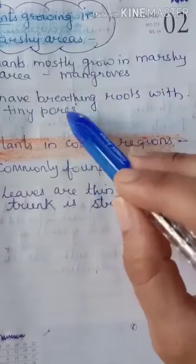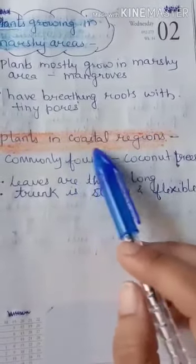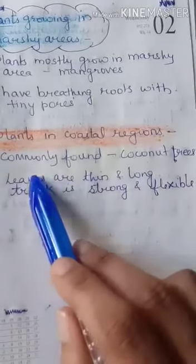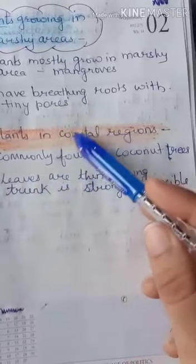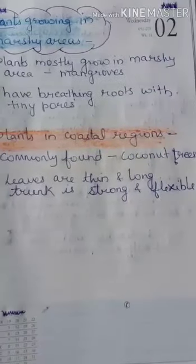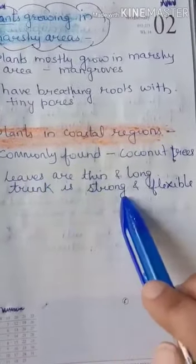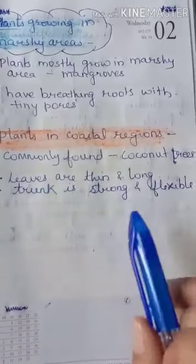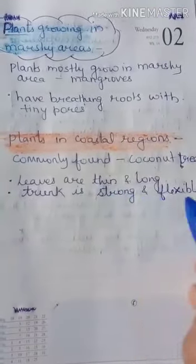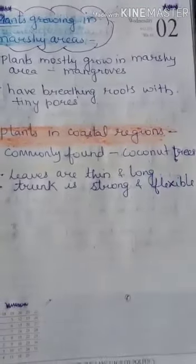Plants in coastal regions — samandar ke paas wale regions — commonly found trees are coconut trees. Unki jo pattiyaan hain wo patli aur lambi hoti hain taaki tez hawa unke beech se nikal jaye aur unko nuksan na pahunche. Their trunk is strong and flexible, so even in strong coastal winds they do not break. These are the adaptations of a coconut tree.